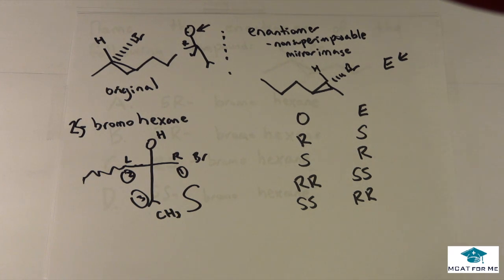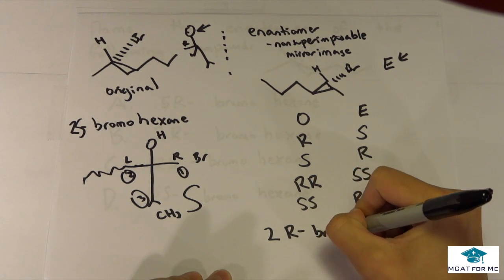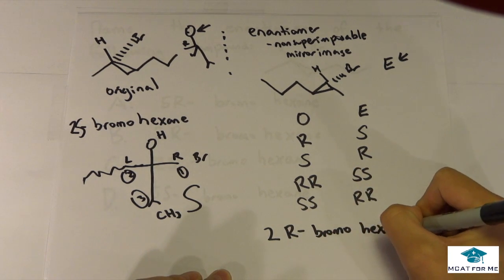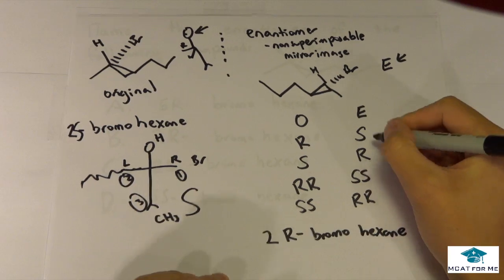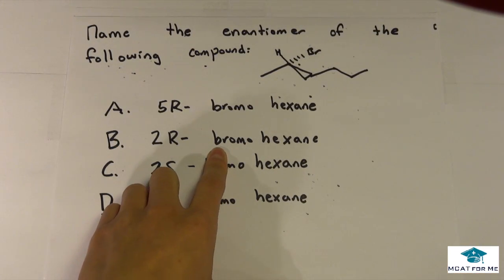What would the enantiomer be? The enantiomer is the reverse. Since the original was S, the enantiomer is R. So it's (2R)-bromohexane, and the answer is B.